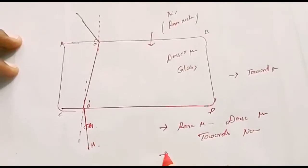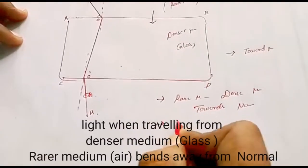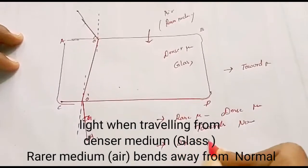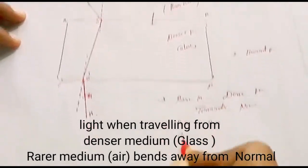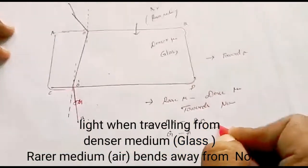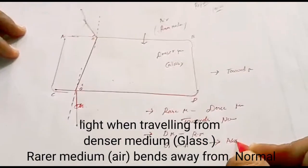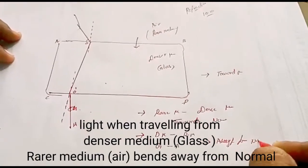And when light is travelling from denser medium to rarer medium, that is from glass to air here, it moves away from normal.